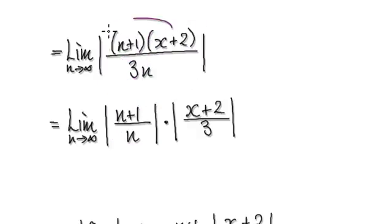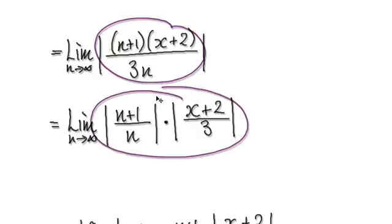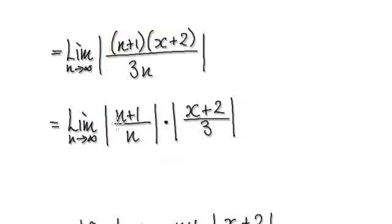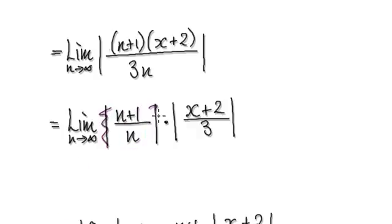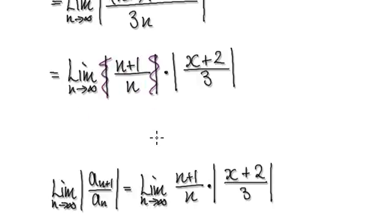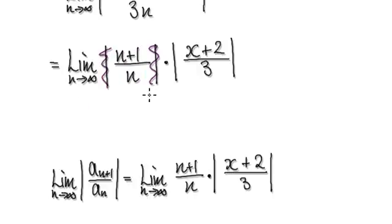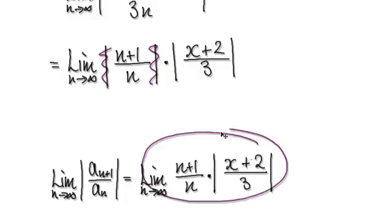This thing here can be visualized as this. Now, n moves from 0 to infinity, so n is always positive. Therefore this will always be positive, so you don't really need the absolute sign here. That will then take you to here.